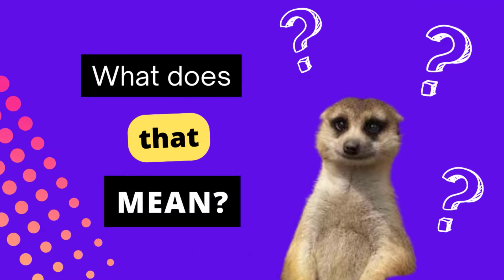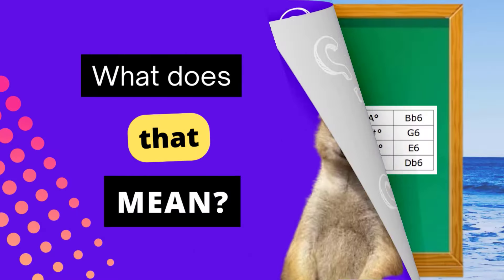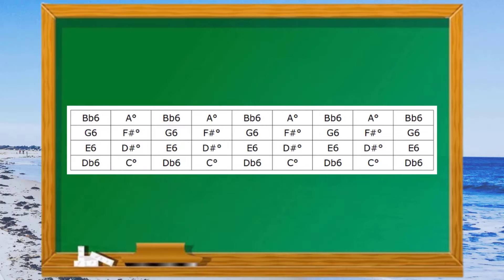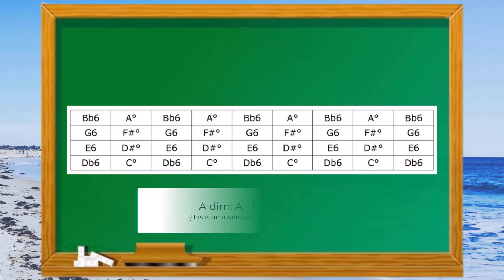Right so what does all that mean? Well a very important point is that the B flat 6, G6, E6, D flat 6 chords are all connected by the one diminished chord. If we think about it the notes in an A diminished chord are A, F sharp, D sharp, C.